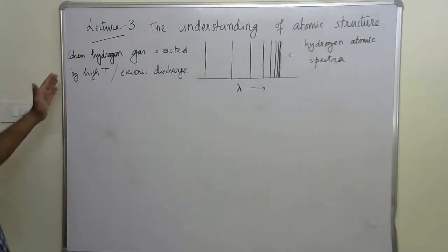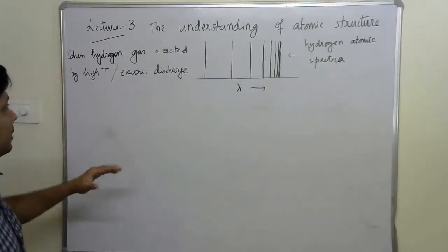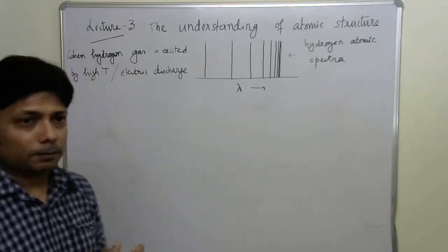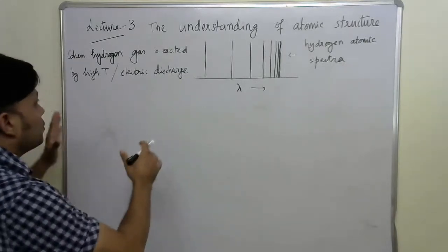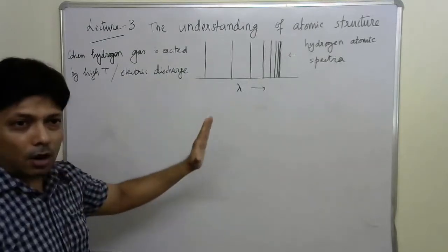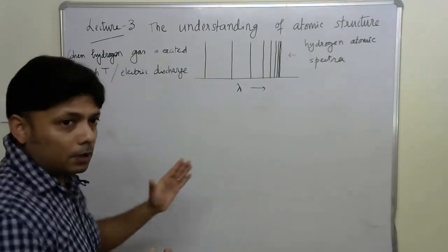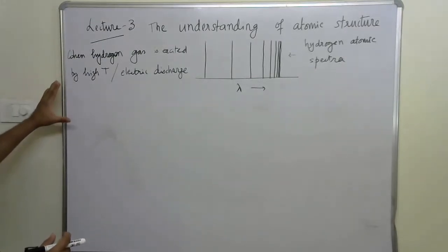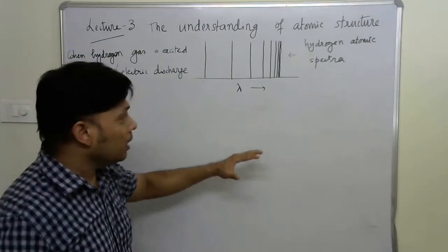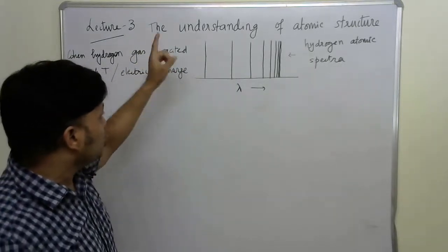Let's take a look at the late 19th century, much before Niels Bohr first proposed the structure of atom. Scientists were aware of atomic line spectra obtained from several gases. One of the most common themes was the hydrogen gas atomic line spectra. When hydrogen gas was excited at high temperature or with electric discharge, people used to notice sharp line spectra.